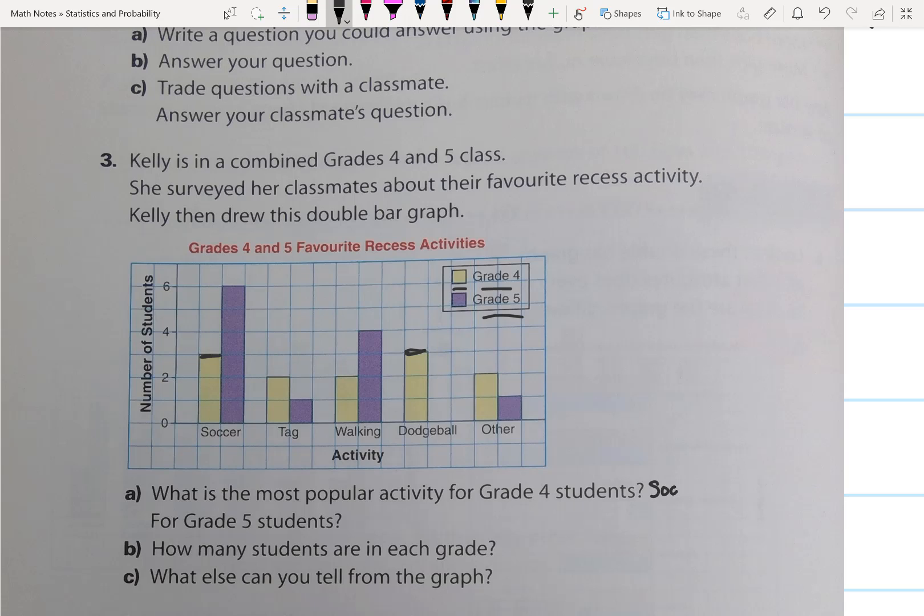So we would say soccer and dodgeball, because there are three students that prefer those two sports. For grade 5 students, we can look and see that the most popular sport would be soccer.